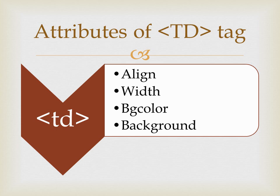TD is table data, and alignment can be given to a particular cell or column. Alignment applies to the data written inside the cell. Then comes width of the cell — you can specify how much size you want for the cell, either in pixels or percentage.